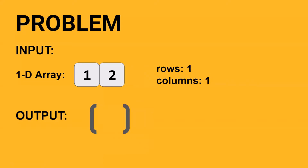It might also be a case that the number of elements in the one-dimensional array is not equal to the elements which should be in the output two-dimensional array. For example, with one row and one column you can have only one element, but if you are given two elements in the one-dimensional array, this case will be considered as an invalid test case. You have to return an empty two-dimensional array as output for this type of input.